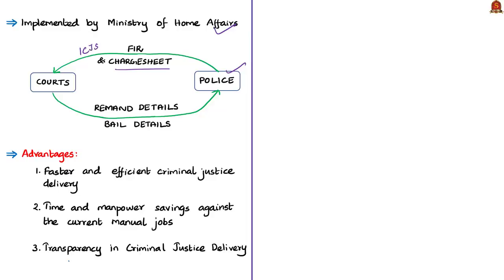If an FIR is ready in electronic form in the police system, the ICJS interface will indicate to the court the readiness of the FIR data. On consumption, the court will get details of FIR number, names of accused, details of the offense, time, date, place of occurrence, and details of arrest. Courts will be able to consume this live electronic data from police. In reciprocation, the courts will send all remand details, bail details, property release, etc., back to police. Police will be able to see updates of each FIR and orders passed by the court in remand, bail or release of property.